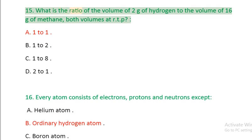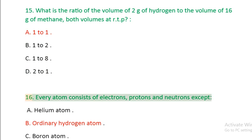Question 15: What is the ratio of the volume of 2 grams of hydrogen to the volume of 16 grams of methane, both volumes at RTP? A. 1 to 1, B. 1 to 2, C. 1 to 8, D. 2 to 1.